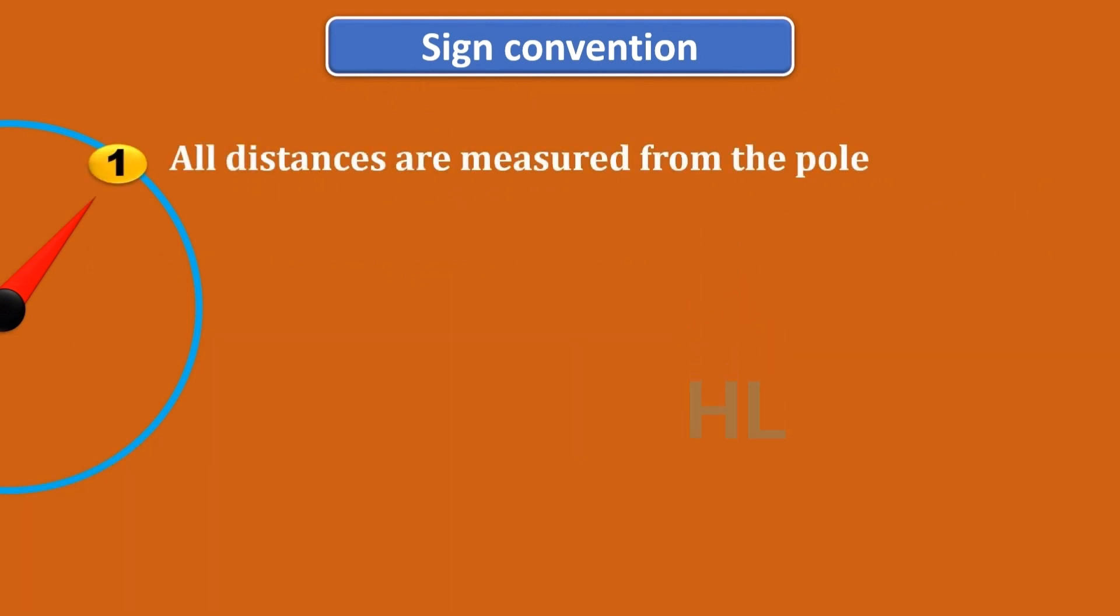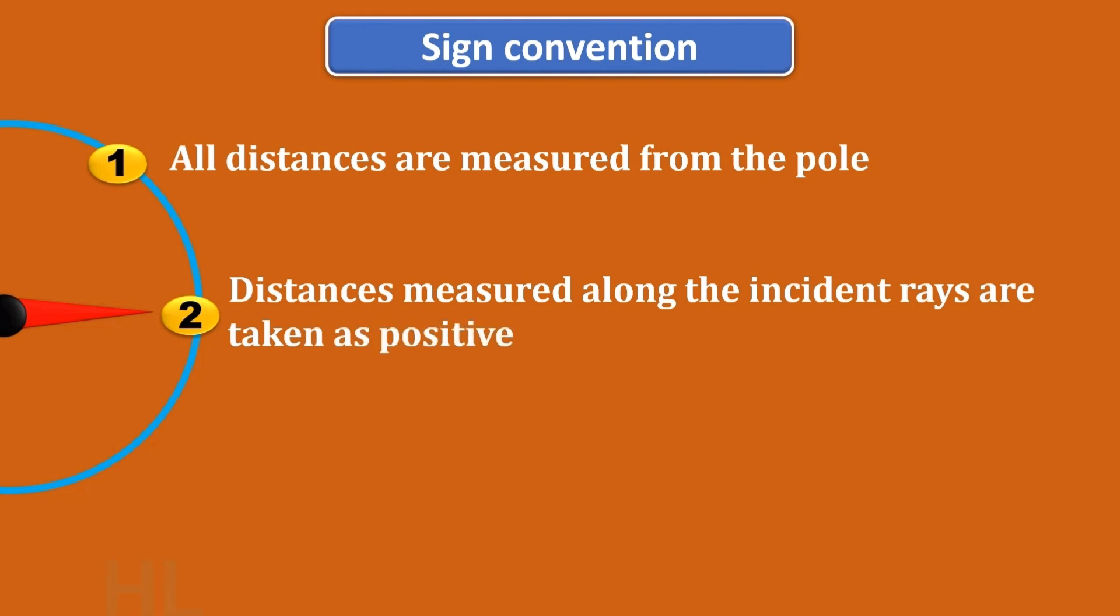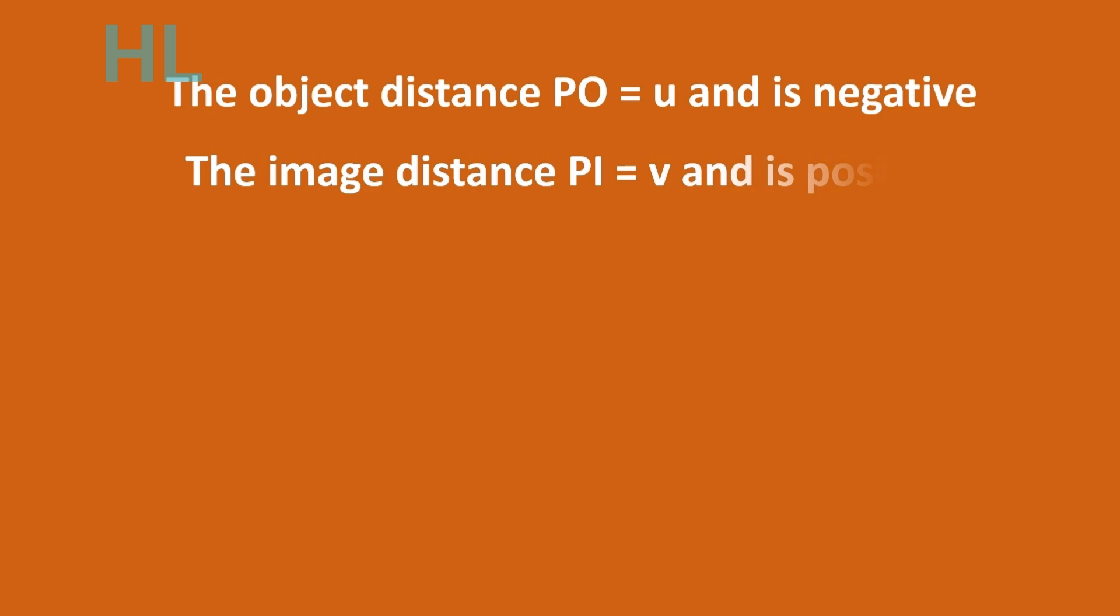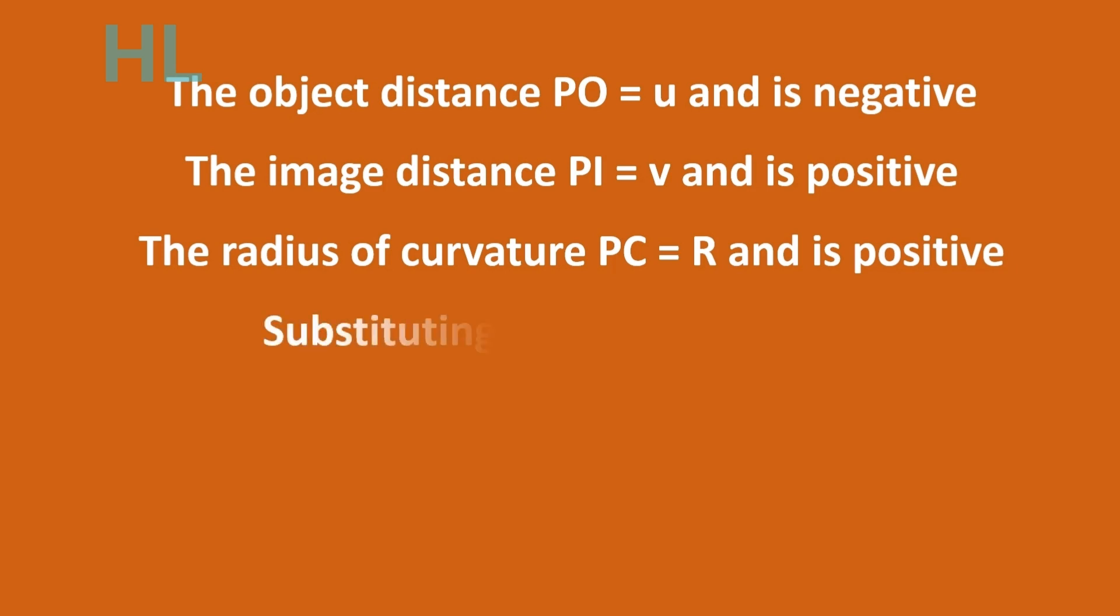Sign convention: all the distances are measured from the pole only. Distances measured along the incident rays are always taken as positive. The object distance PO is equal to U and is negative. The image distance PI is equal to V and it is positive. And the radius of curvature PC equal to R is also positive.